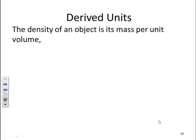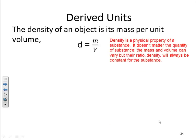Another important derived unit is density. The density of an object is its mass per unit volume. In other words, d is equal to m over v. Density is a physical property of the substance. It doesn't matter the quantity of the substance. The mass and volume can vary. However, that ratio of mass to volume will always be constant for a substance. So that substance will always have the same density.